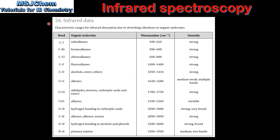In table 26 of the data booklet you'll find all the information that you need to solve problems for infrared spectroscopy. We have the type of bond, the organic molecule, the wave number, and the intensity.